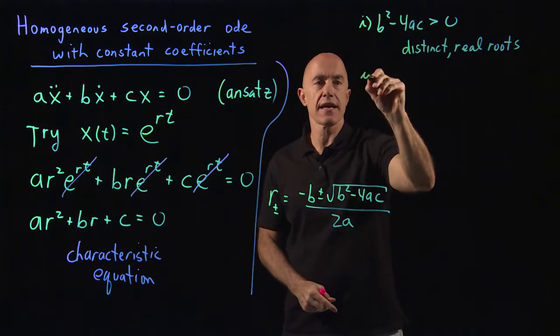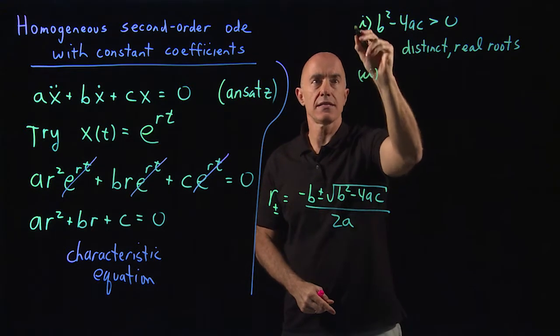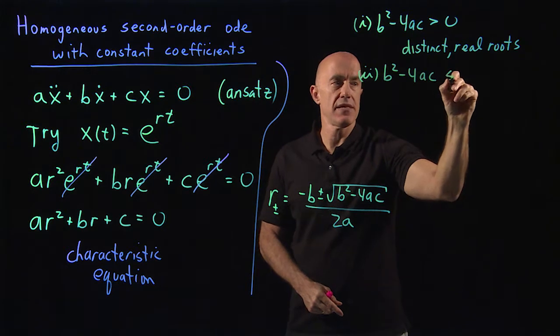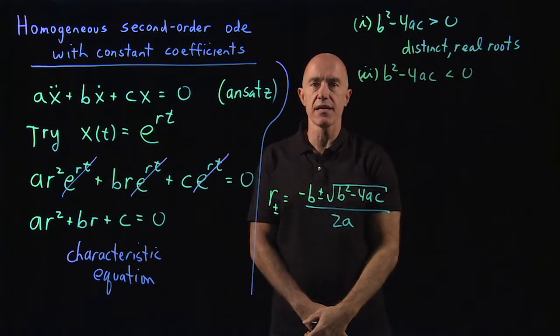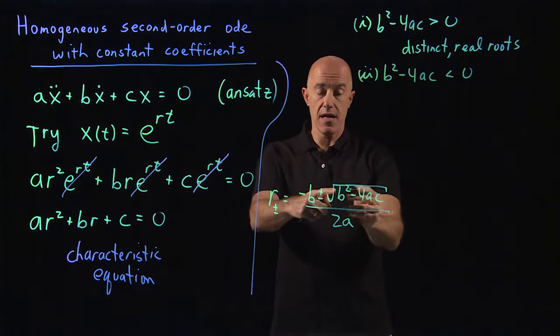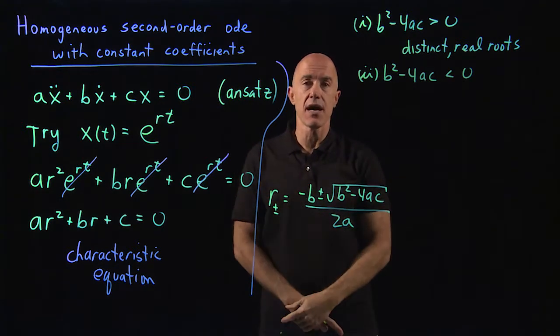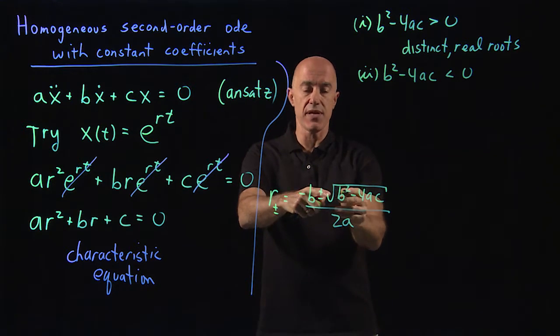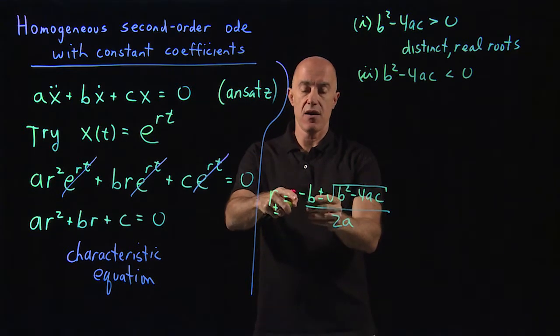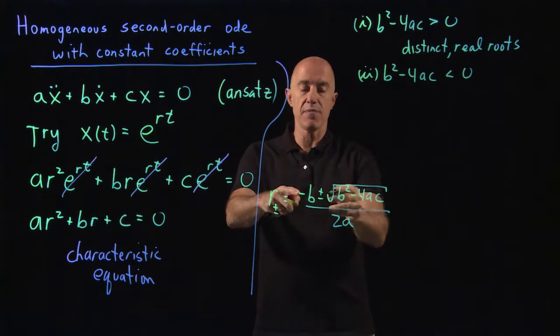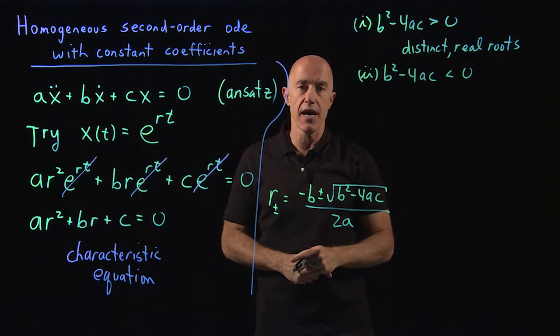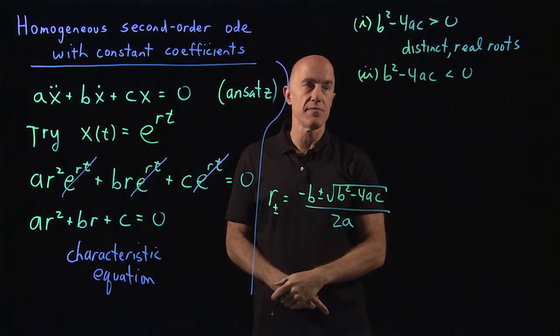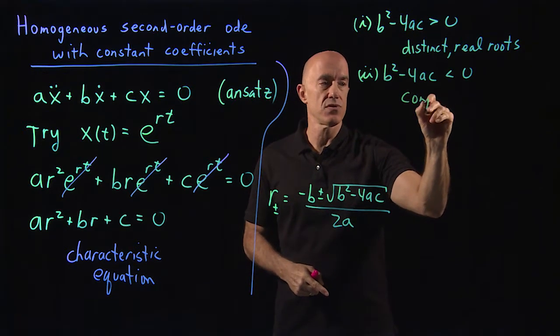The second thing that can happen is that b squared minus 4ac may be negative. Then we have the square root of a negative number. That means we have complex conjugate roots. So we have negative b over 2a plus something times i, and negative b over 2a minus something times i. So this is complex conjugate roots.